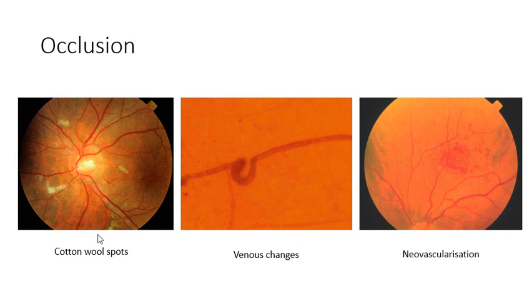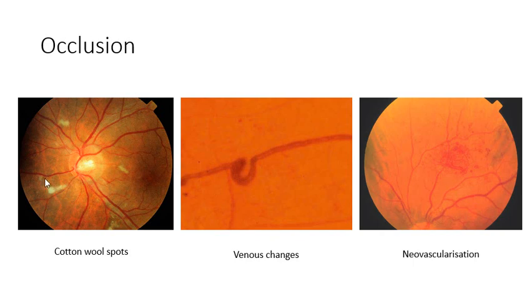This is why you'll mostly see cotton wool spots close around the optic disc, where the nerve fiber layer is thickest — they're less obvious in the periphery where it is thinner. They are white in colour because the axon debris particles that gather there scatter light and reflect back as a white image. The normal nerve fiber layer is actually transparent.